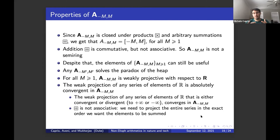We require that the set is closed under the following operations that are basically the same as before, but instead of bounding them from below at 0, we bound them from below at minus M. Very fancy notation, but the concept is pretty straightforward. So what are the properties of this A_{-M,M}? Since it's closed under products and summations box times and box plus, we have that A_{-M,M} is the closed interval [-M,M]. Addition box times is commutative, but it's not associative. So A_{-M,M} is not a semi-ring.